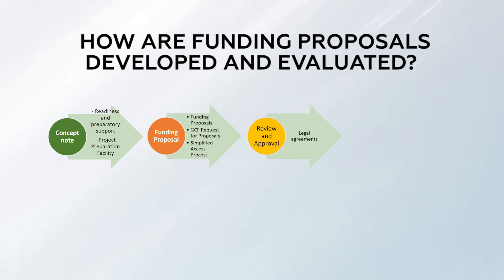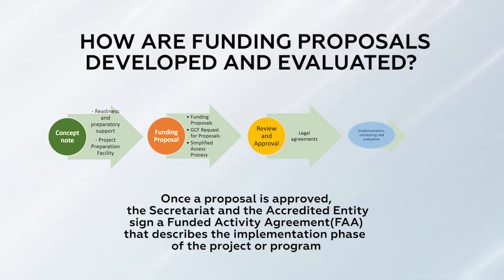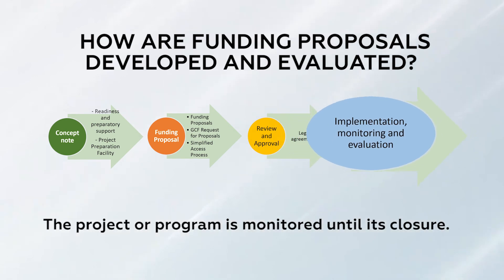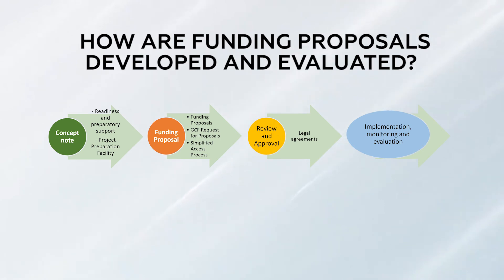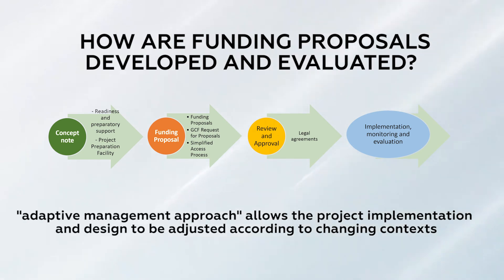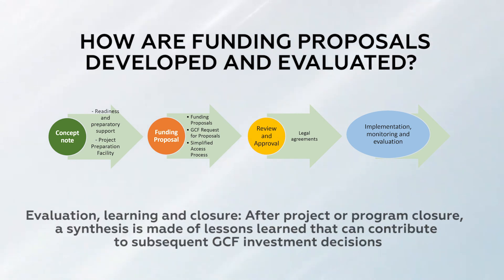After the funding proposal is approved, entities must go through legal agreements, including signing a funded activity agreement that describes the implementation phase of the project or program. The project or program is then monitored until its closure. During implementation, the GCF applies an adaptive approach, meaning the design and implementation can be adjusted according to changing context. After closure, a synthesis of lessons learned is produced to contribute to subsequent GCF investment decisions.